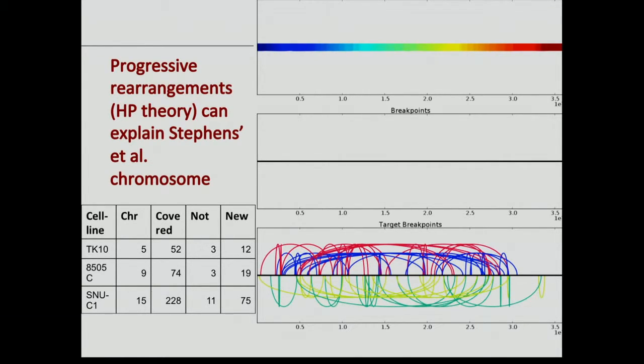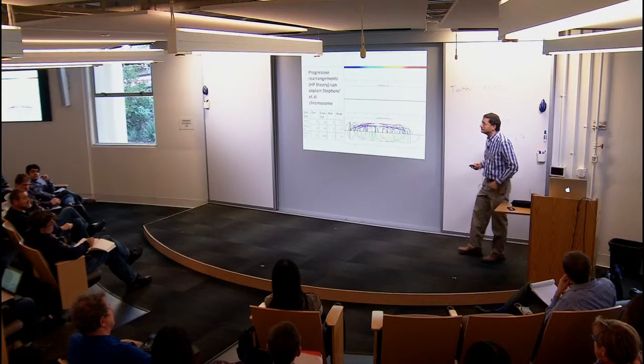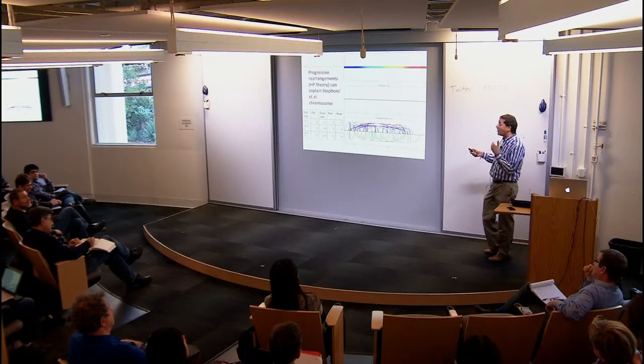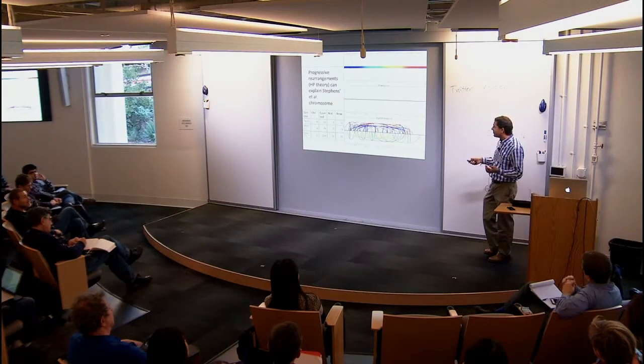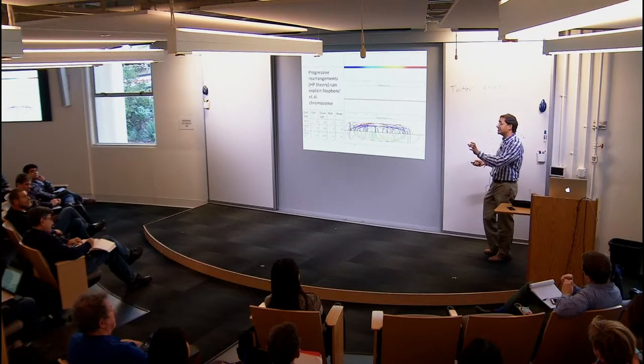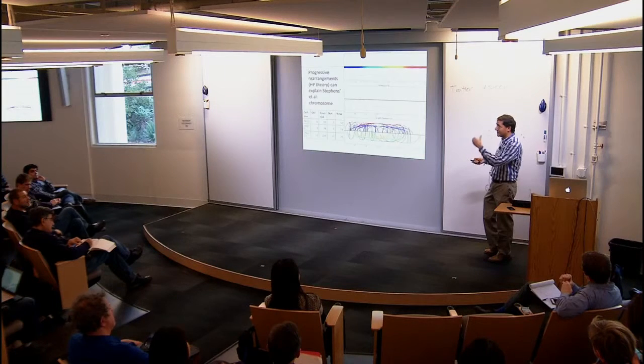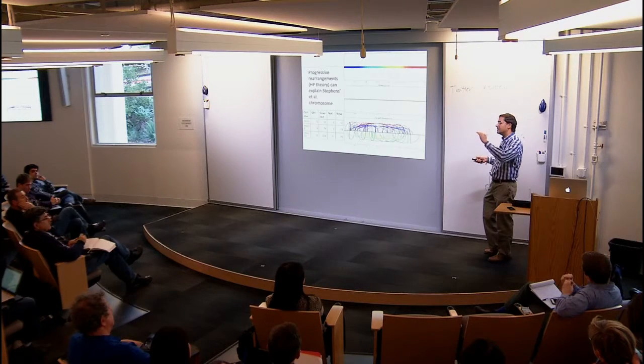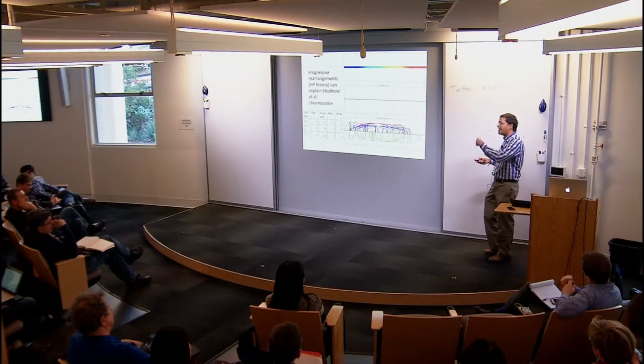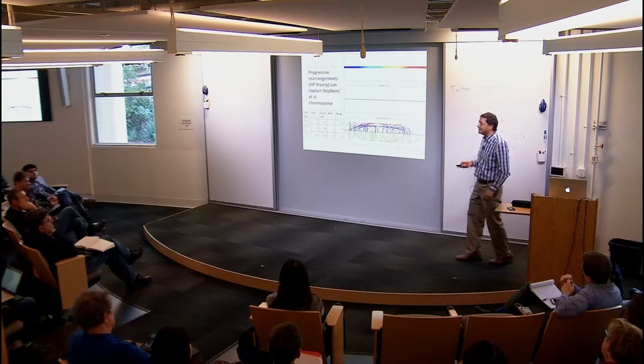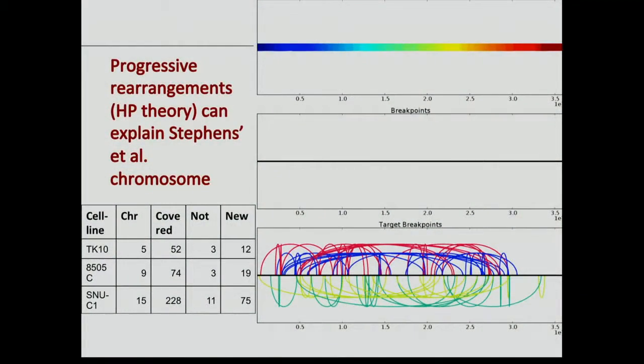We made, we already have the target graph, so we know which things must be rearranged. There are things missing from the data because the original data had copy number states which were low and high, so you can delete that portion. It's a greedy procedure plus some breakpoints. We can talk offline. I can tell you how we did it.